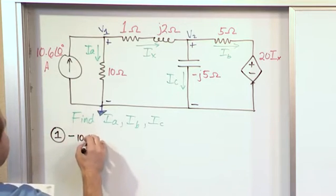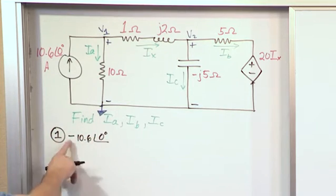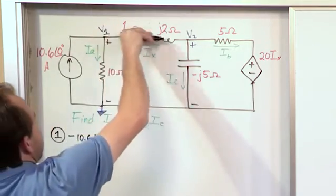So, this is going to be a negative 10.6 at an angle of 0 degrees. That's phasor current going in. It's negative because it's going into the node. And then we have this branch here and this branch right here.